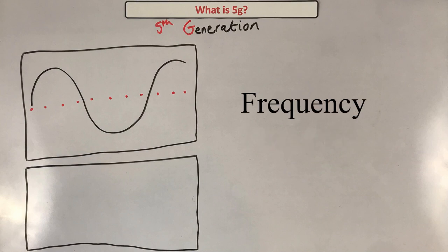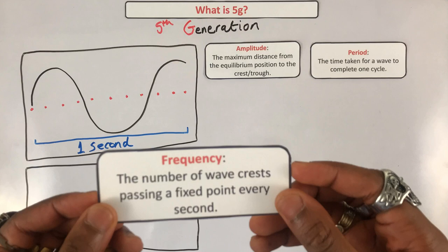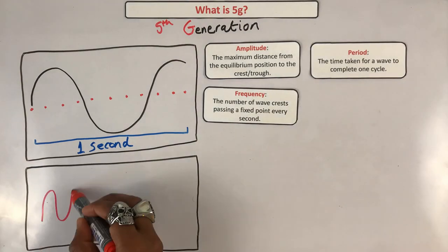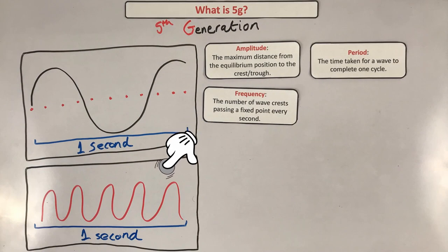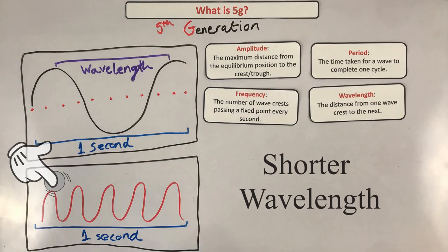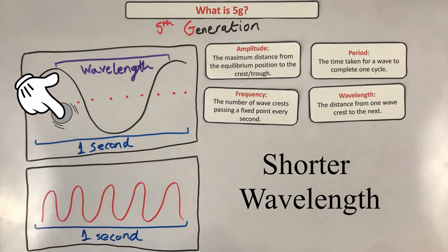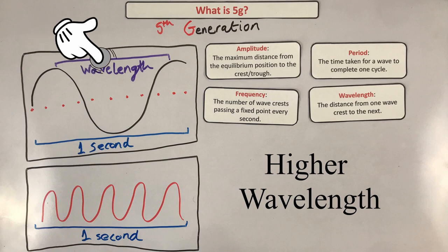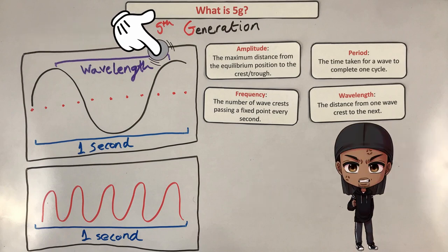Waves have four properties, but you only need to understand two of them for this video: frequency and wavelength. Frequency is the number of waves that pass a point per second — the higher the frequency, the more waves you have in the same amount of time. Wavelength is the distance from one wave crest to that same point on the next wave, so the higher the wavelength, the longer the wave.